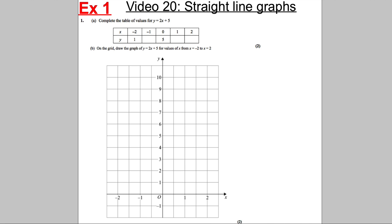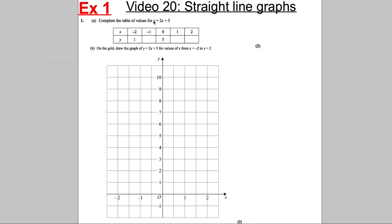In example one, you can be asked to complete a table of values for a straight line. Here the straight line we're given is y = 2x + 5, and we're given a table where x is negative 2, negative 1, 0, 1, and 2. We're asked to complete the table for two marks and then plot it for the other mark.